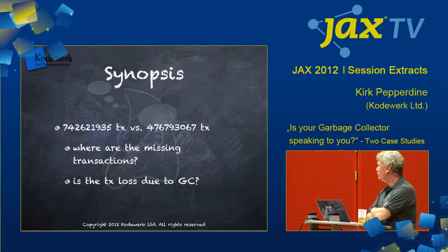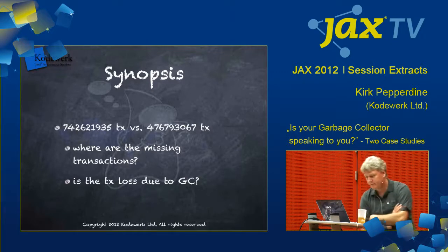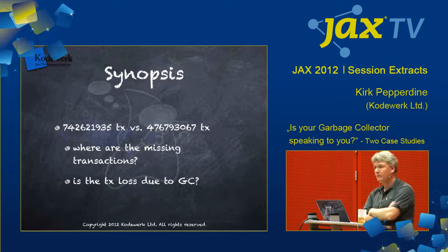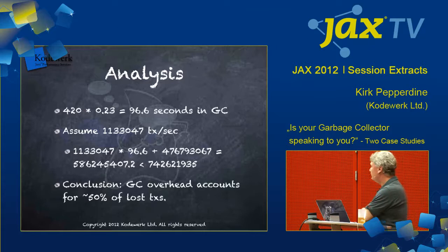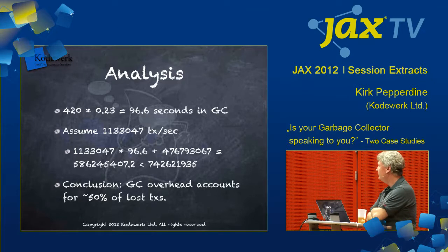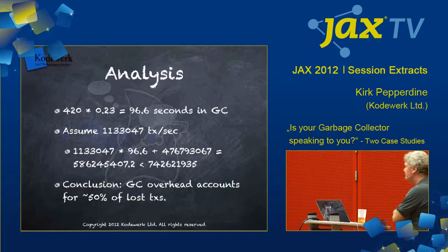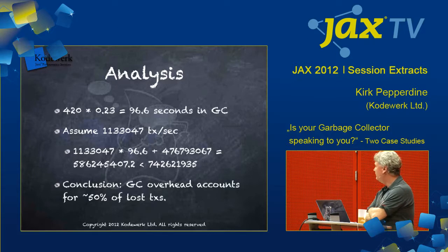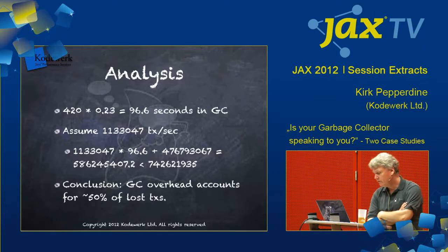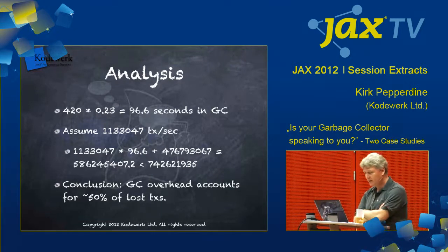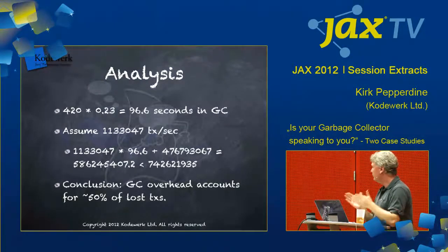If we start looking at this, we're going to say that's the total number of transactions we had in the large heap versus how many transactions we had in the small heap. The question is, where are the missing transactions? Is the transactional loss due to garbage collection? Well, we can actually figure that out. We took the 420 seconds, multiplied it by 0.23, and that means we spent 96.6 seconds in garbage collections. Assuming the transactional rate of 1,330,47 is true, we can see that the transactions lost due to garbage collection are still less than the number we got with the larger heap. So the conclusion here is that garbage collection overhead accounted for about 50 percent of all the lost transactions. But there's also another portion of the story — where's the other 50 percent?